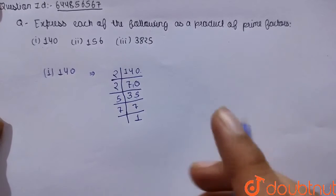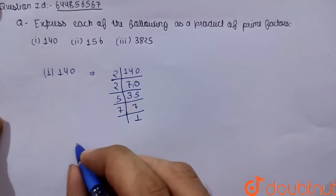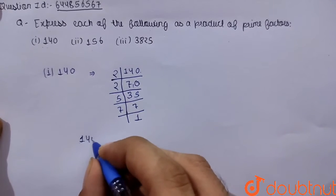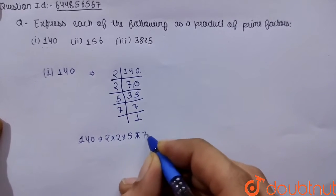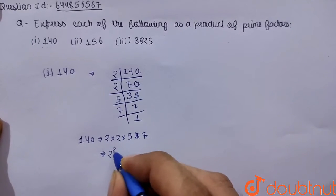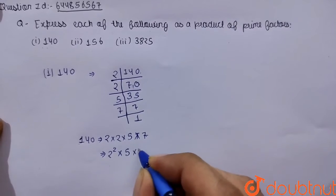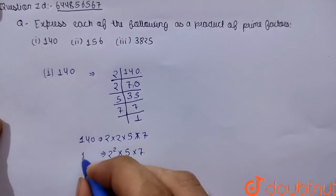Now let's write it in the form of its prime factor. So 140 can be written as 2 into 2 into 5 into 7, which can be also written as 2 to the power 2 into 5 into 7.